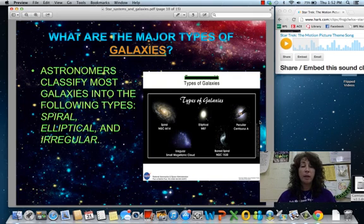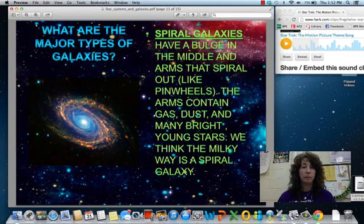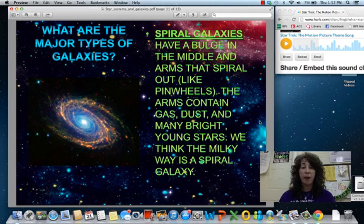Now, when we are talking about galaxies, as you saw in the video on the different galaxies, there are three major types. There are spiral, elliptical, and irregular. Spiral galaxies have that huge bulge in the middle and arms that spiral out. So it looks like a pinwheel, something that you might get at a fair.